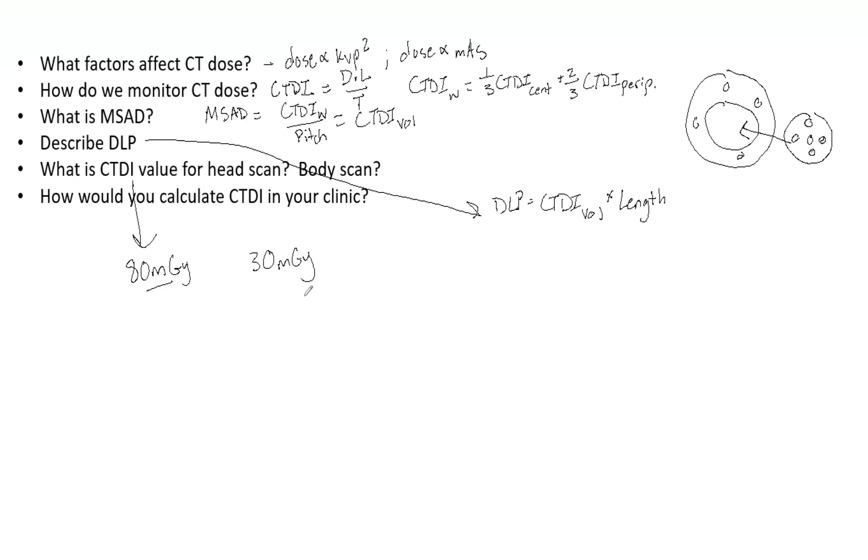And then how would you calculate CTDI in your clinic? As I kind of mentioned over here, you're going to use a pencil chamber in a lucite phantom. That's typically what these are. And these have different circular phantoms.